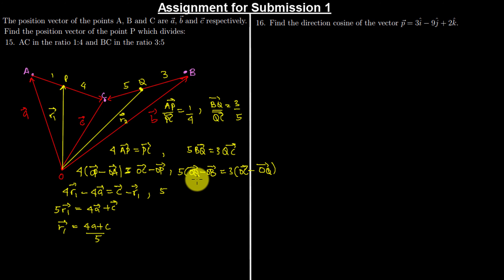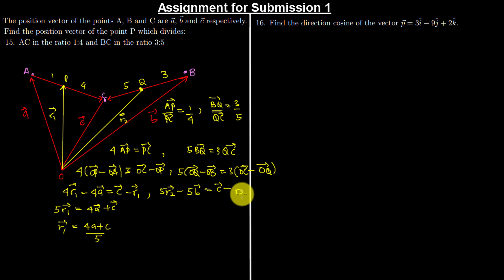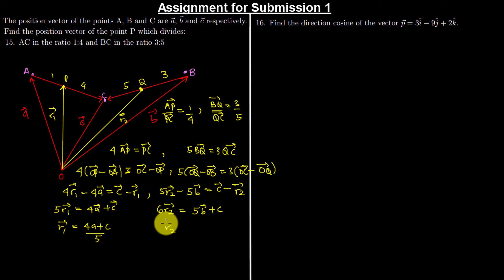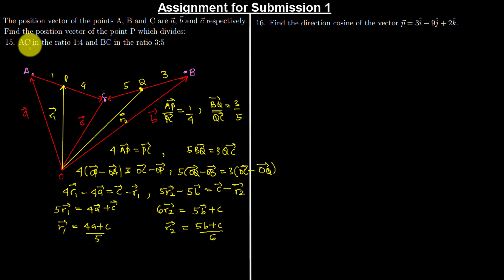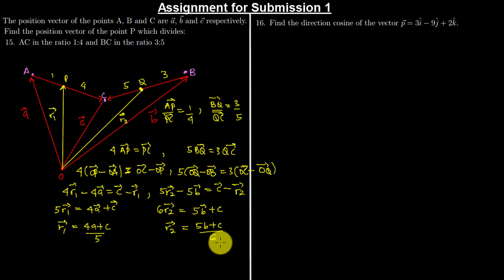Similarly for Q: OQ = R2, OB = B, so 5·BQ = 5(R2 − B) and 3·QC = 3(C − R2). Collecting like terms gives 6·R2 = 5B + C, so R2 = (5B + C)/6. The position vector dividing AC in ratio 1 to 4 is (4A + C)/5, and the position vector dividing BC in ratio 3 to 5 is (5B + C)/6.